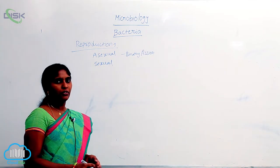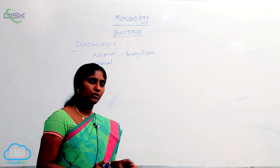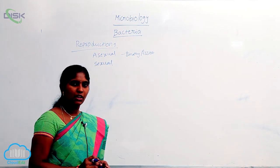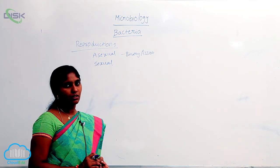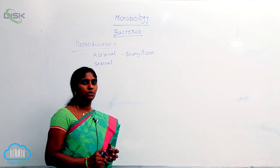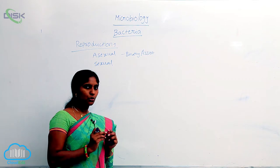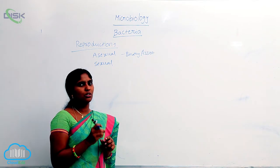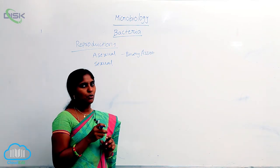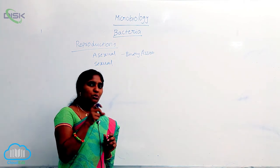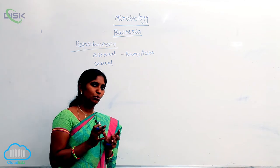In favorable conditions, every 18 to 20 minutes, the bacteria undergoes binary fission. From one mother cell, it duplicates and produces two cells. Within a short duration, within favorable conditions and nutritional availability, it divides and multiplies more and more.